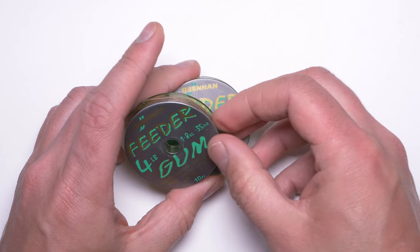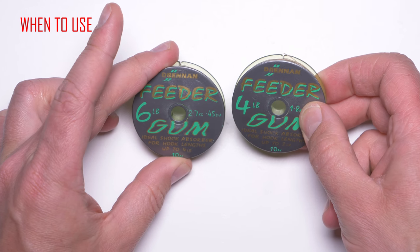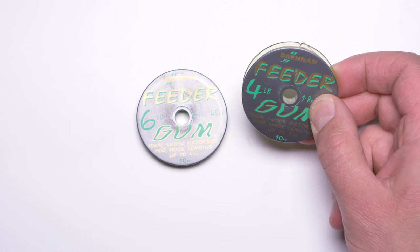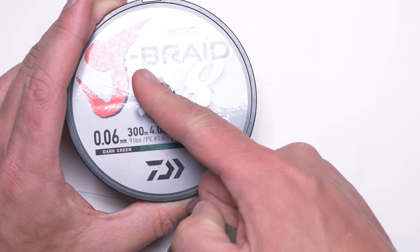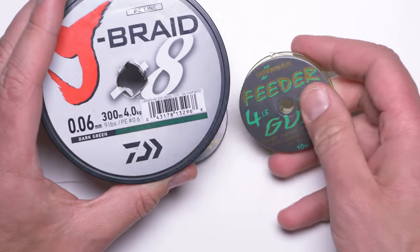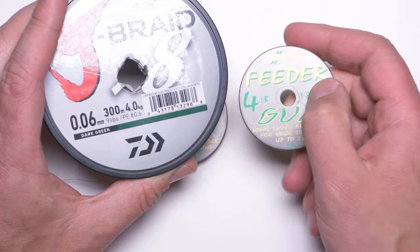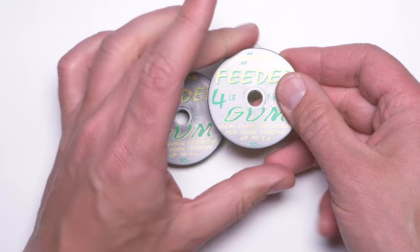First things first, when to use a feeder gum. I would say that feeder gum is required in certain situations. Feeder gum is required when you are using braided line. Braided line obviously doesn't have any stretch at all, so you want to compensate that by using feeder gum.